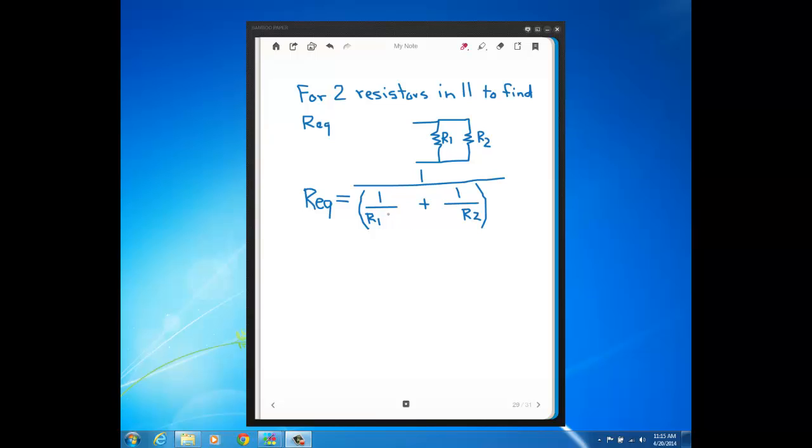But you see if we put this over a common denominator we can get REQ for two resistors in a convenient form. So if I multiply top and bottom here by R2 and then over here, I multiply top and bottom by R1.